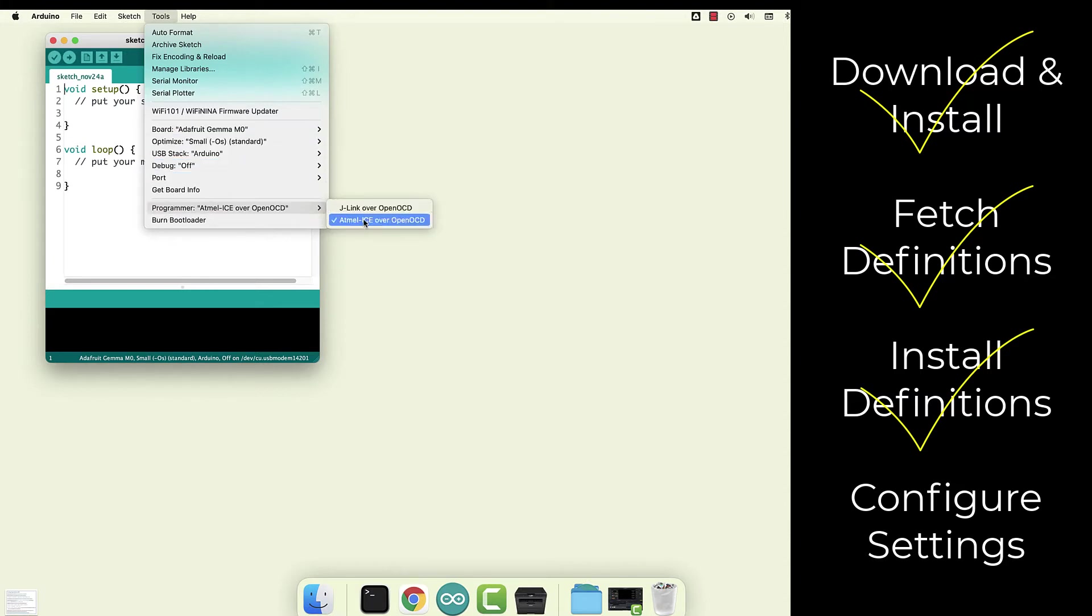And then also look under port. One port has to be selected no matter what. And you might not have any here until you plug in the USB for the Gemma board. So this is a place where you'll have to come back probably every time you launch the app to make sure you have a port selected.